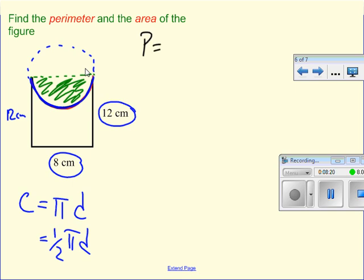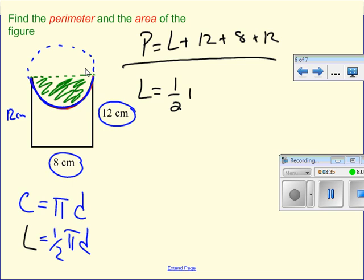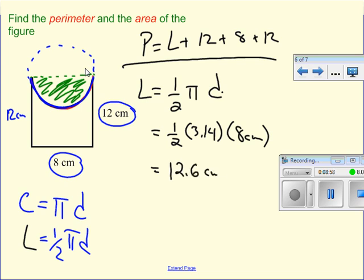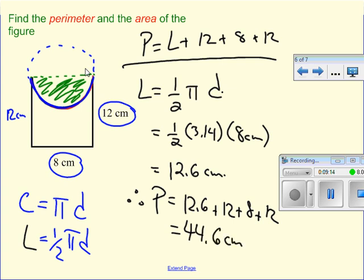So my perimeter, P, is going to equal to, and I'm going to call this the length, L plus 12, plus 8, plus another 12. L is equal to one half pi times the diameter. One half times 3.14 times the diameter, which is 8 centimeters. And that's going to give me a total of 12.6 centimeters. So therefore, if I calculate my perimeter, I have 12.6 plus 12, plus 8, plus 12, which gives me a grand total of 44.6 centimeters as my perimeter.